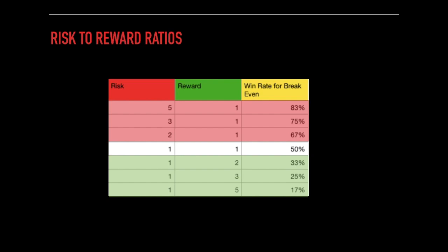The amount of money you risk on each trade should be lower than, or at least the same as, the amount you aim to make. For example, if you risk $100 on a trade and aim to profit $100, that's a risk-to-reward ratio of one to one. This allows you to be wrong 50% of the time to break even. But unless your win rate is above 50%, you won't make money using a one-to-one ratio.